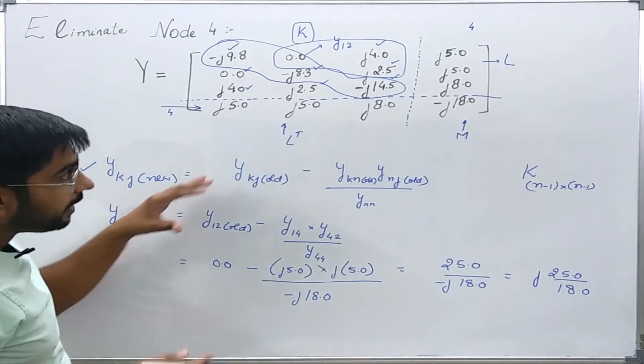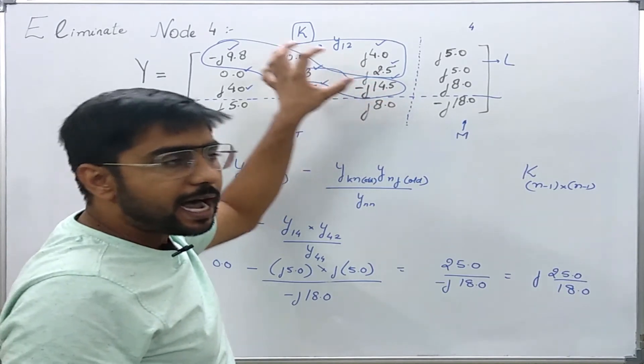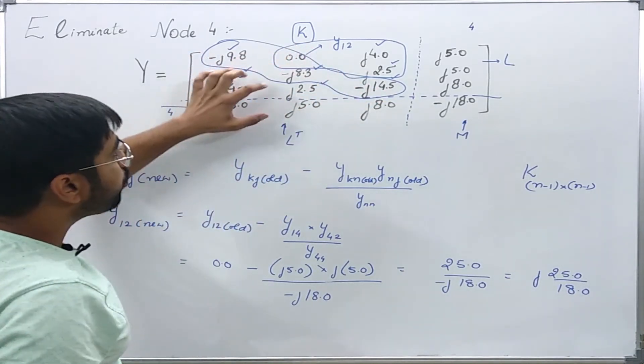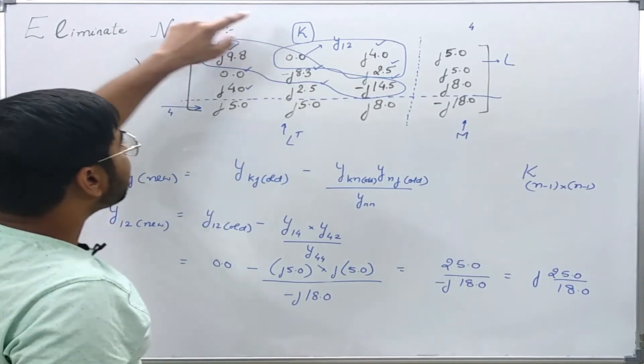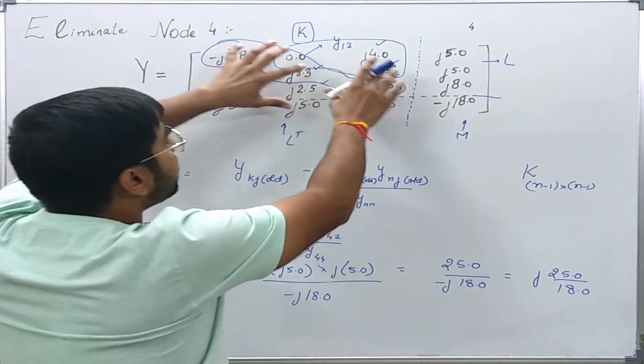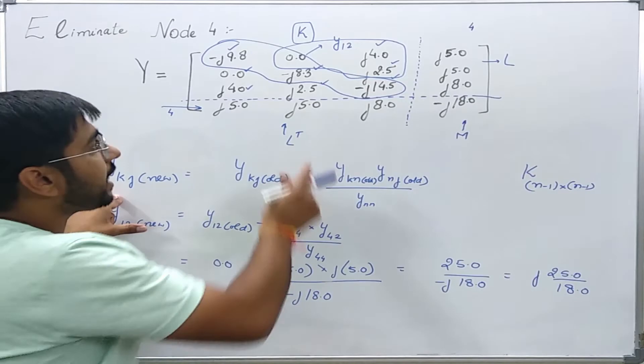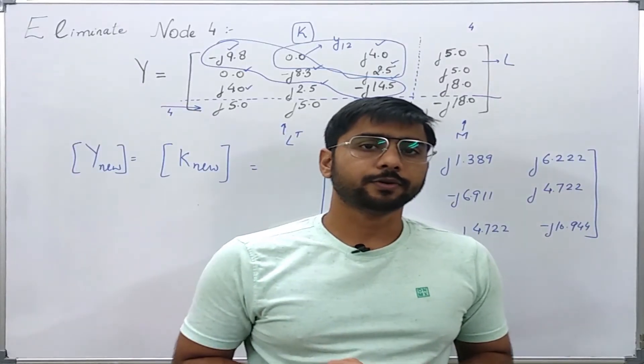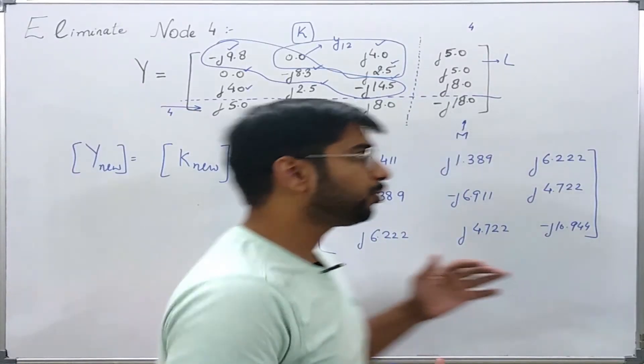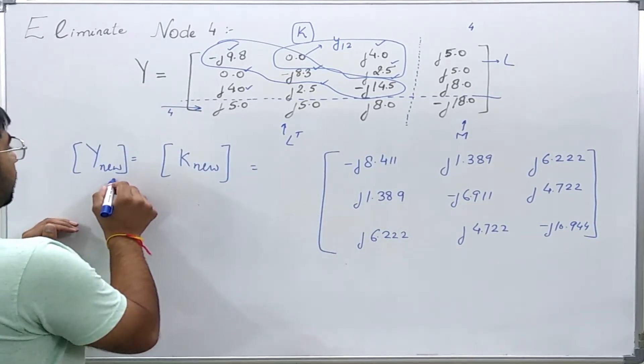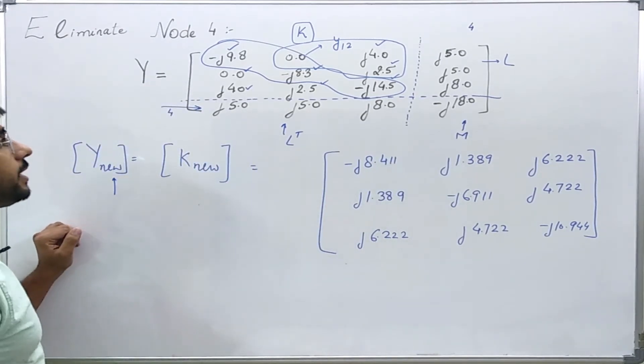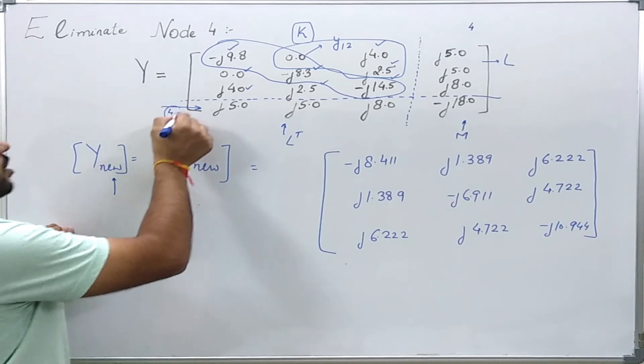Now, I have already solved this example. I will directly write the new matrix K which I will get on repeated calculations using this formula. And in the next slide, I will directly write the new matrix. Here I have written the new K matrix which is equal to the new admittance matrix after elimination of node 4.